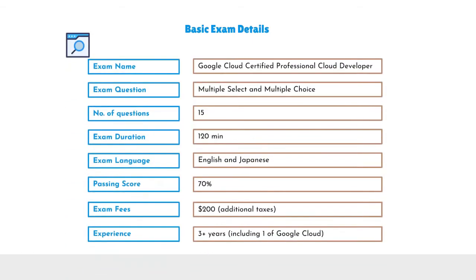We will discuss about basic exam details. The GCP Cloud Developer exam is a two-hours-long exam. The candidate will encounter various questions such as multiple-choice and multiple-select. The registration fee is US$200. However, the exam is only available in English and Japanese language. The examination is only valid for two years.